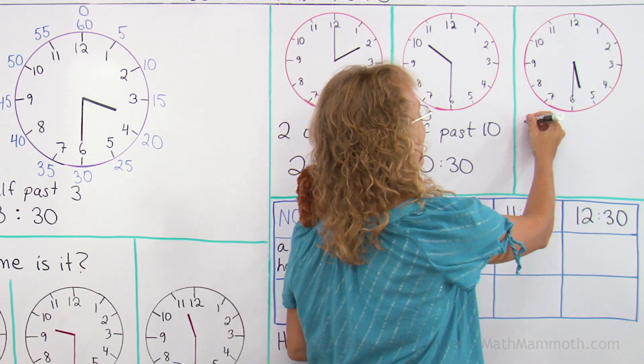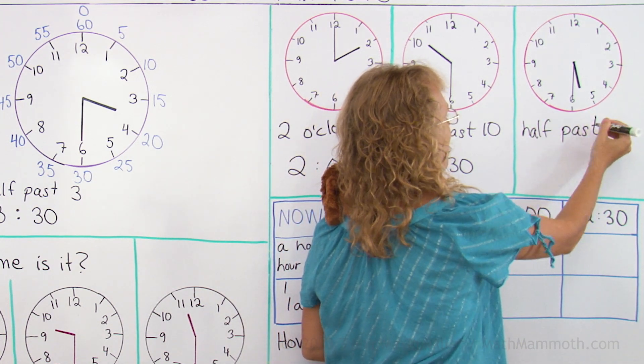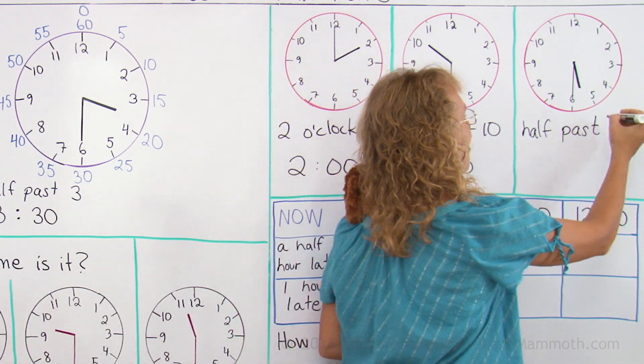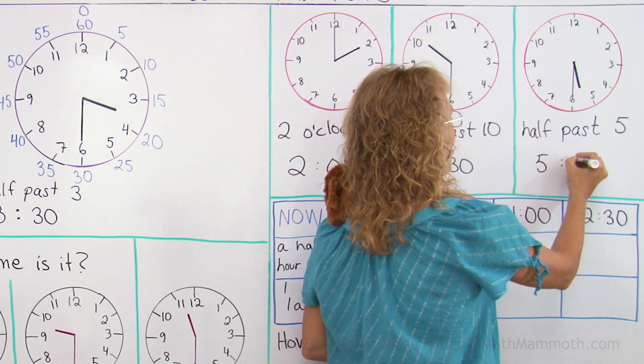And over here, we have half past what? The hour hand has gone past 5 o'clock, so it is half past 5. And then with numbers, 5:30.